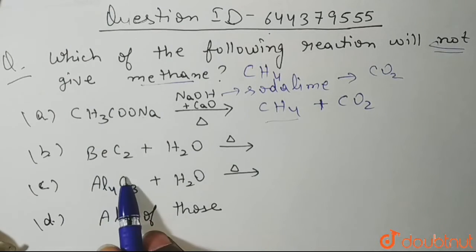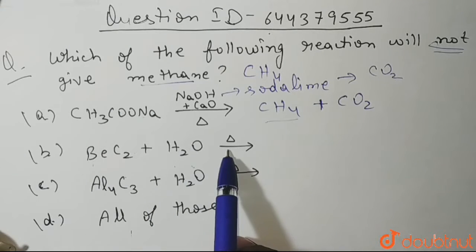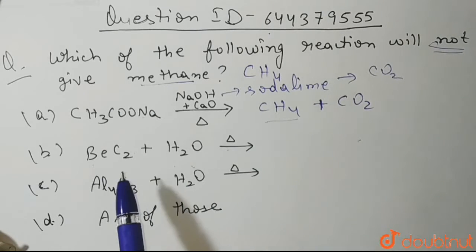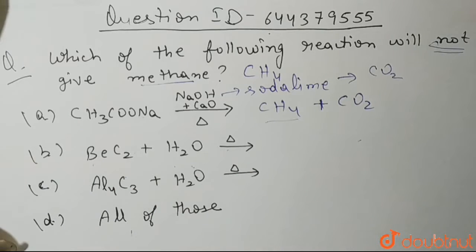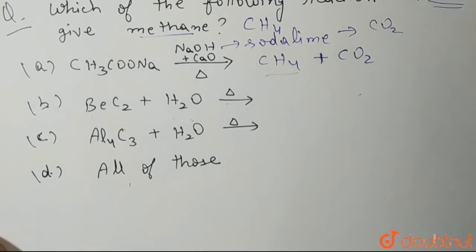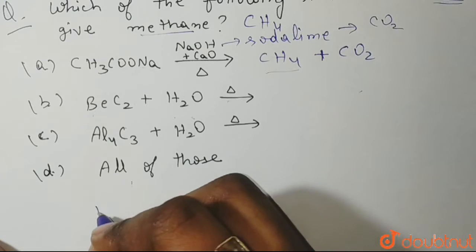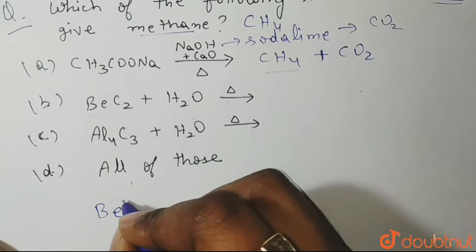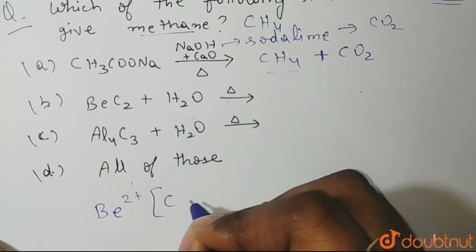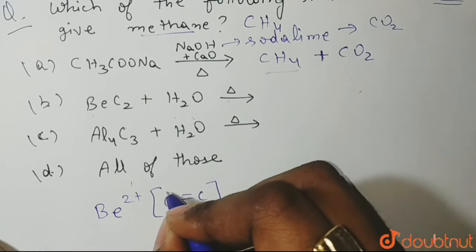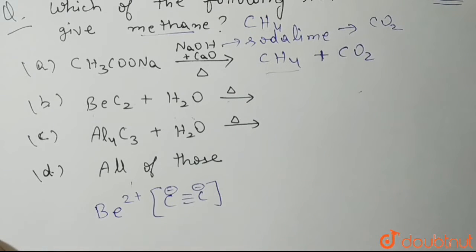Now second is BEC2. BEC2 plus water reacts and heats. BEC2 is nothing but beryllium carbide and we should know the structure of this. Beryllium carbide is BE2 plus and C triple bond C minus. So this is the structure of beryllium carbide.